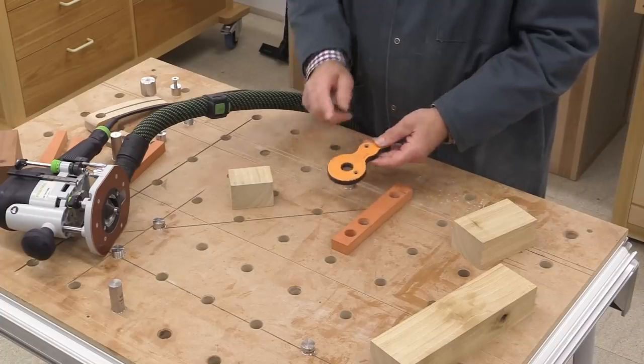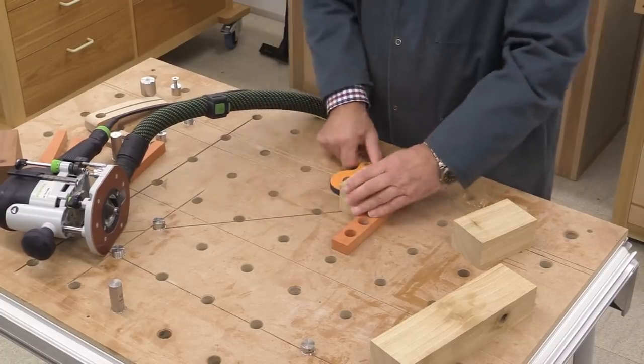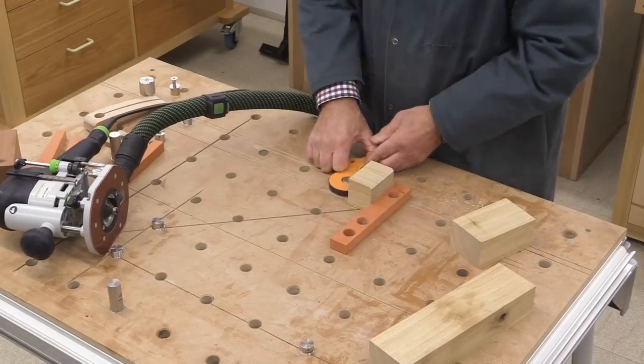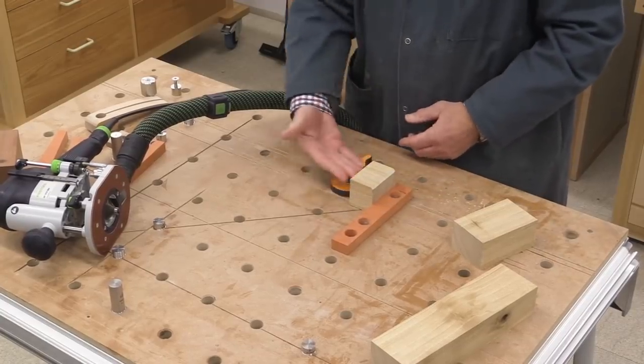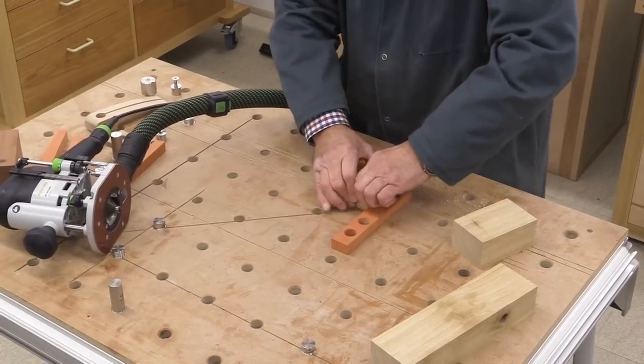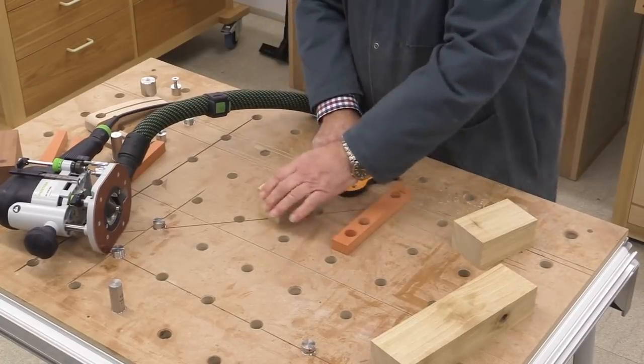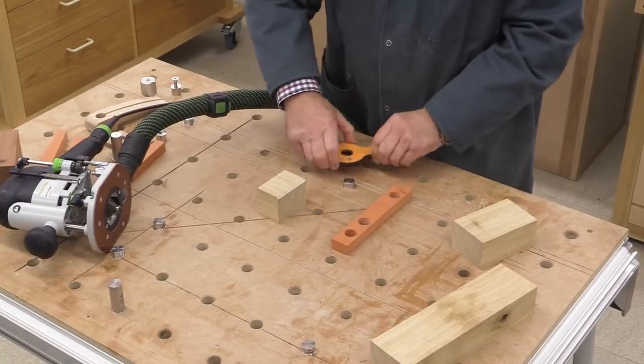This is a cam clamp that when you put it down onto a surface like this, put something in there, and then you rotate it a little bit, and it then tightens against there. And that's pretty tight. I could almost lift the MFT3 with that. That's held really tightly.